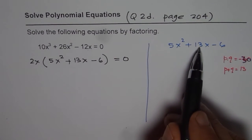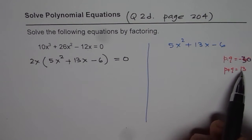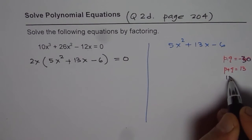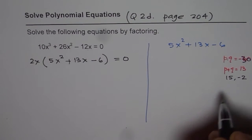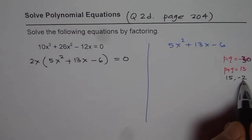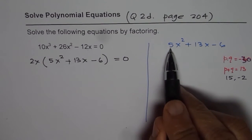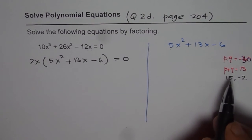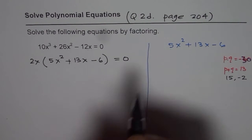Now, since the sum is positive, we will use plus 15. So, the numbers are plus 15 and minus 2. When you multiply these two numbers, you get 30, which is product of 5 and minus 6. When you add them, you get 13.